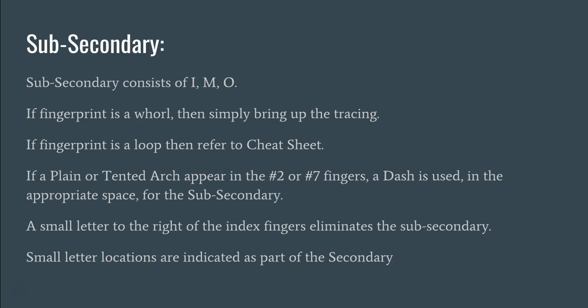If there's a small letter to the right of the index fingers, then we don't have a sub-secondary. However, we still note the locations of those small letters as part of the secondary area. So if any prints in the 2, 3, or 4 area, or the 7, 8, or 9 area are plain arches or tented arches, we won't have a sub-secondary, but we still note their location in our Henry classification.